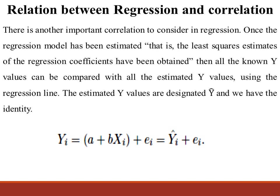The estimated y values are designated y-hat. We have the identity mentioned in the second and third lectures: y-i equals y-hat, which equals a plus b times x-i, plus the error term e-i, which equals y-hat minus y-i.